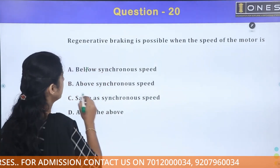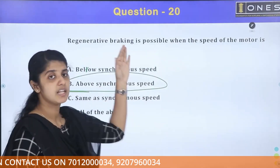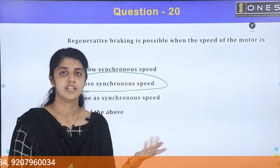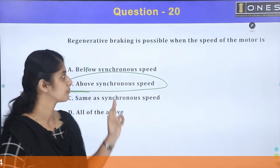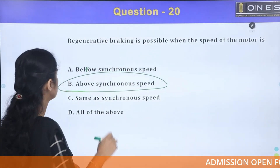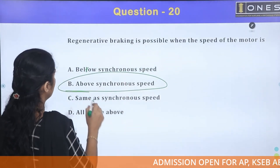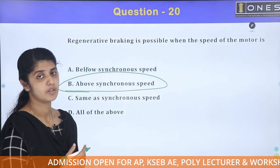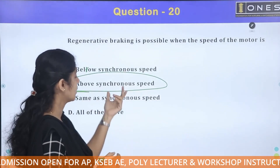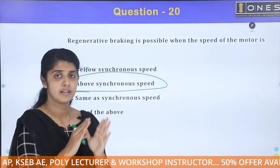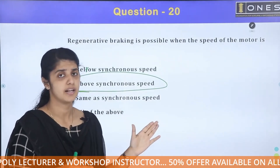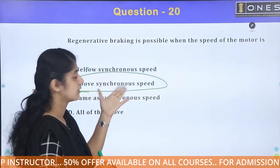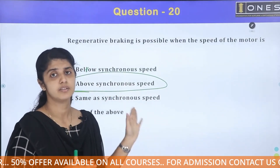Regenerative braking occurs when the speed is above synchronous (rated) speed. In this condition, the motor acts as a generator and feeds energy back to the supply. Therefore, regenerative braking is possible when the speed is above the rated synchronous speed.